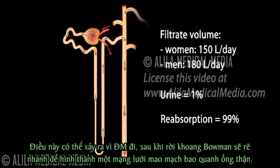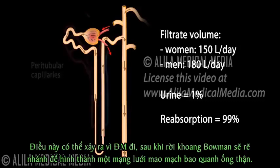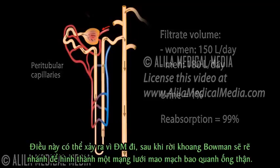This is possible because the efferent arteriole, after exiting the Bowman's capsule, branches out to form a network of capillaries known as peritubular capillaries, which surround the renal tubule.